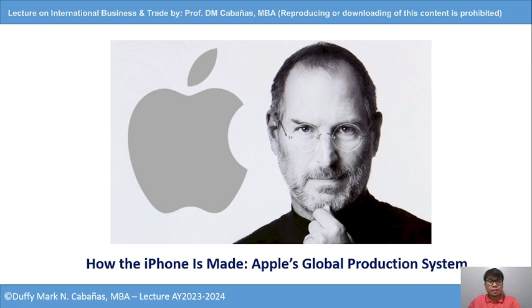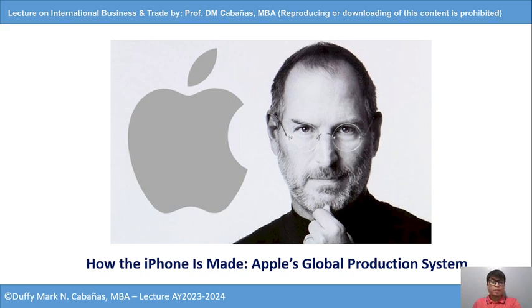Apple still employs some 80,000 people in the US and has kept important activities at home, including product design, software engineering, and marketing. Furthermore, Apple claims that its business supports another 450,000 jobs at US-based suppliers. For example, the glass for the iPhone is manufactured at Corning's US plants in Kentucky, Analog Devices in Massachusetts produces chips that enable the iPhone's touch display, and a Texas Instruments plant in Maine makes electronic components that go into the iPhone.